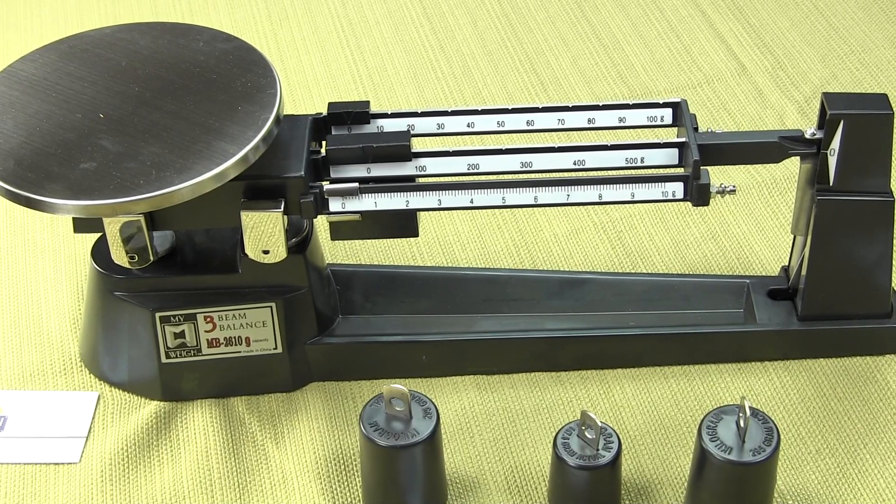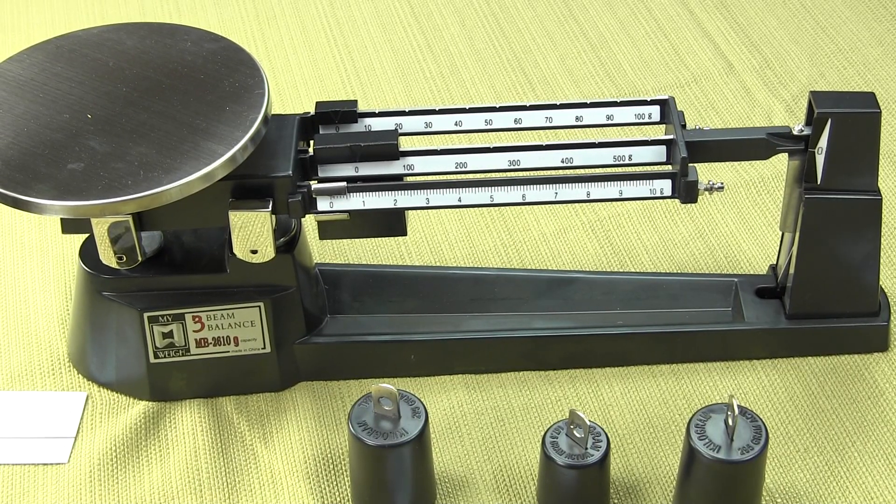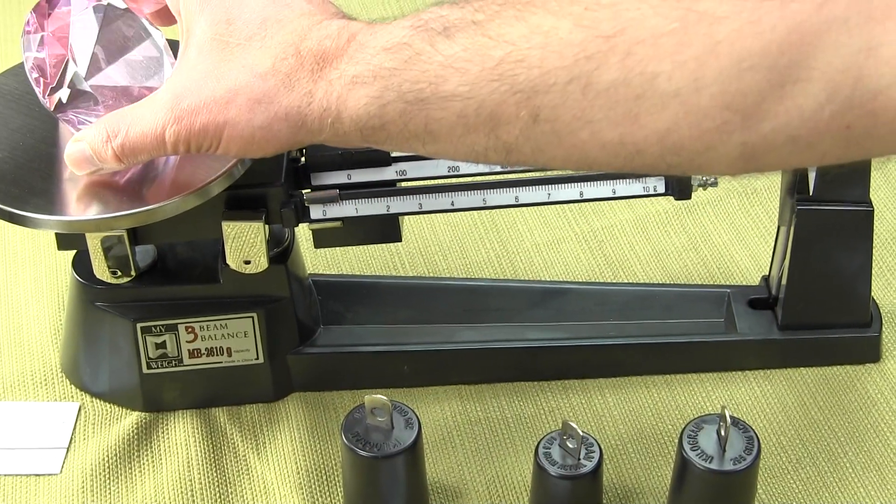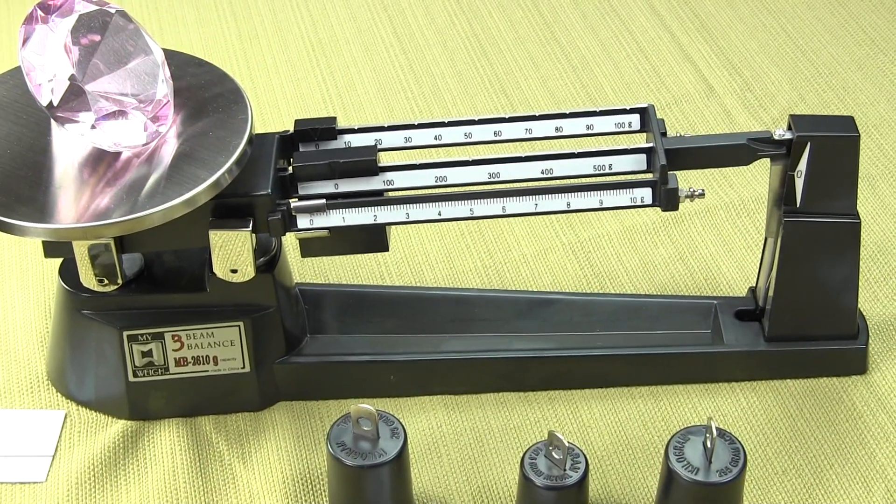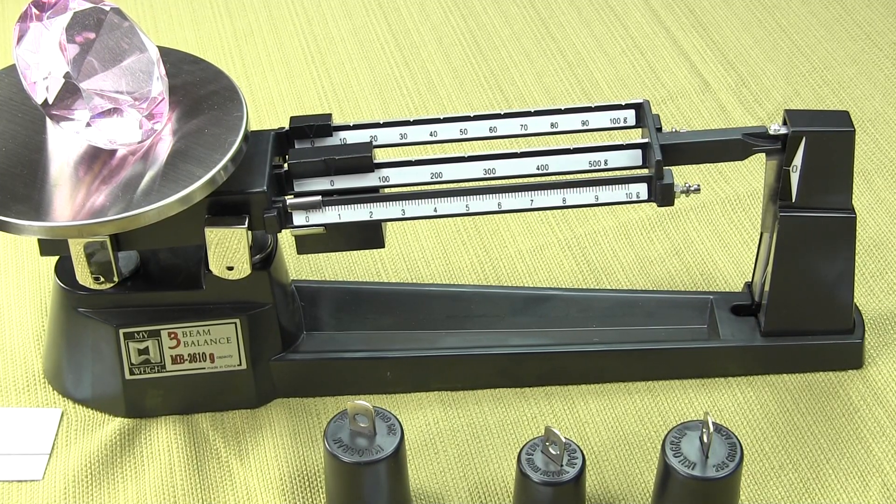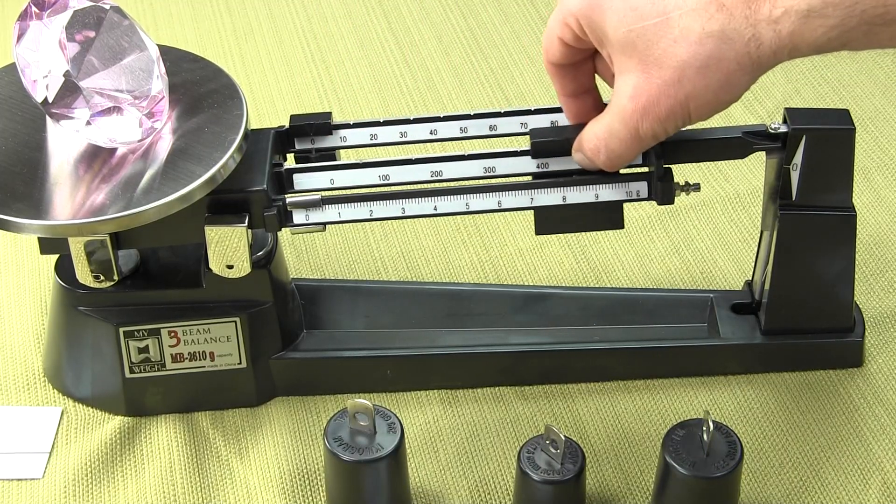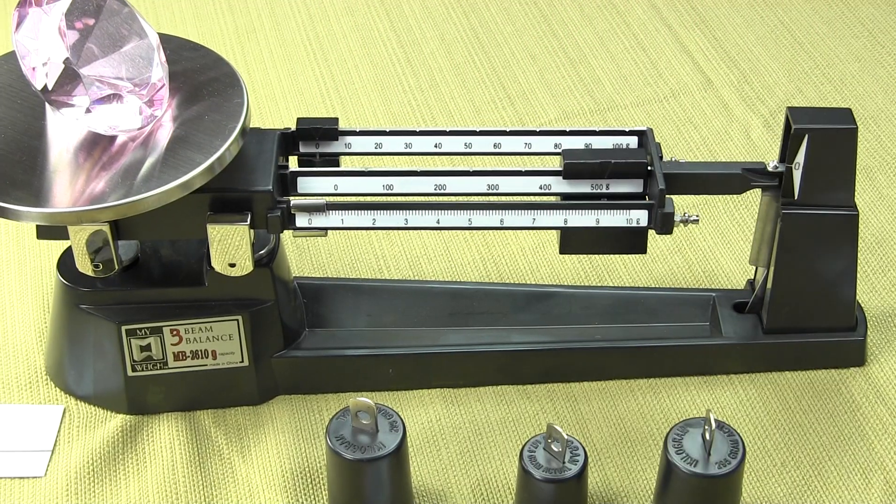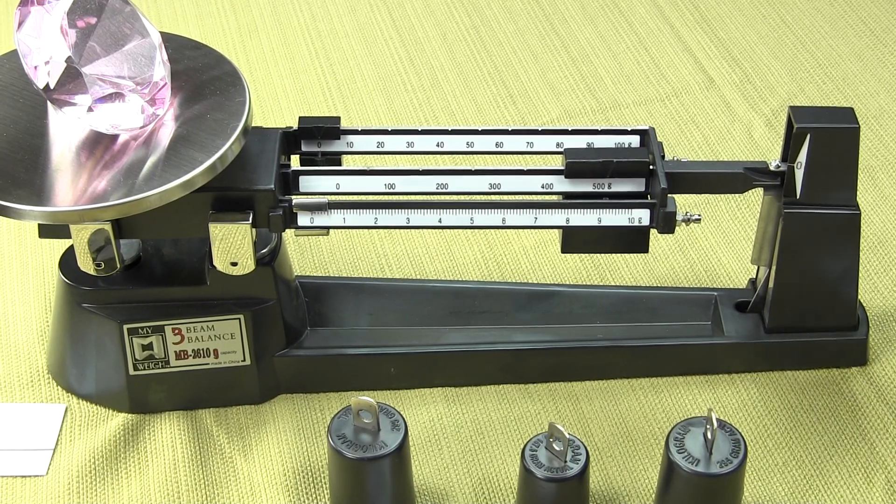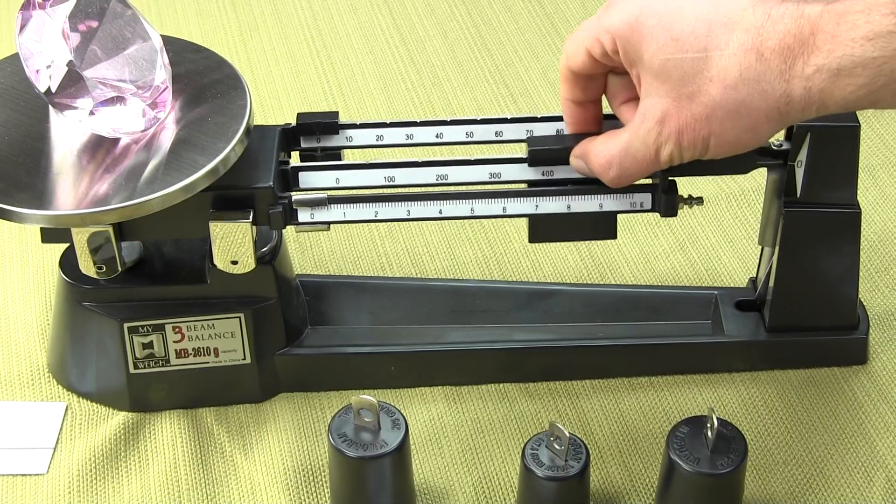Now let's give some examples on how to actually weigh with the three beam. I have here a large diamond. If we put this right onto the weighing platform, the proper way of using the three beam balance is to slide the largest poise all the way across until the beam goes down. When the beam goes down, we know that this diamond is less than 500 grams.